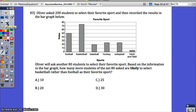Problem number 83. Oliver asked 200 students to select their favorite sports, then recorded the results in the bar graph below. So these are the results out of 200 students, meaning that a total of votes should be 200. Oliver will ask another 80 students to select their favorite sport. Based on the information in the bar graph, how many more students of the next 80 are likely to select basketball rather than football?